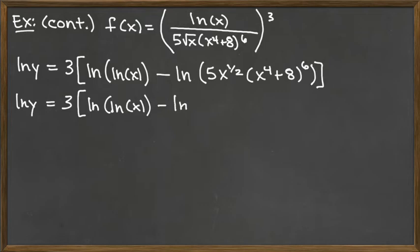So I'm going to say minus the natural log of 5 and then minus the natural log of x to the 1 half and minus the natural log of x to the 4th plus 8 raised to the 6th power. Technically speaking, I would have minus and then parentheses, three things added together, but I'm taking those three things that are added together and going ahead and distributing that minus sign across so that I have one less step to write.